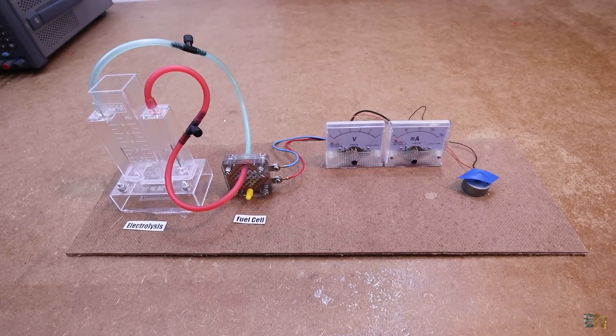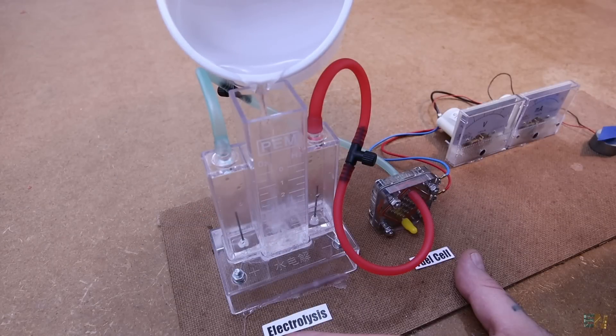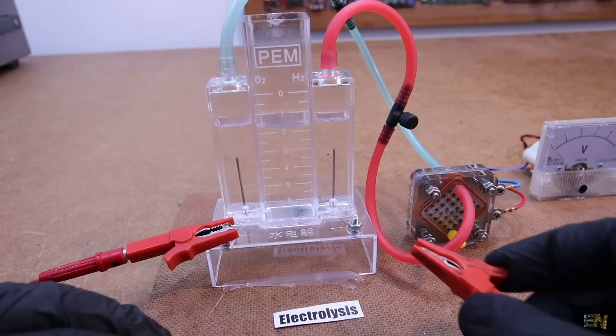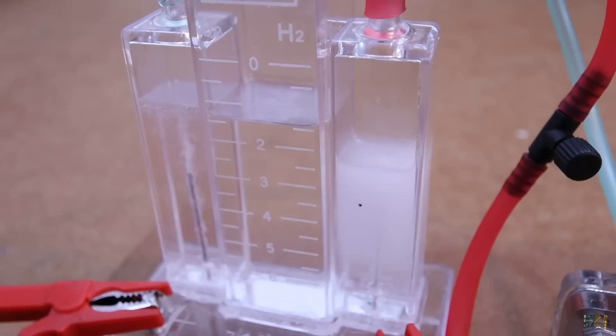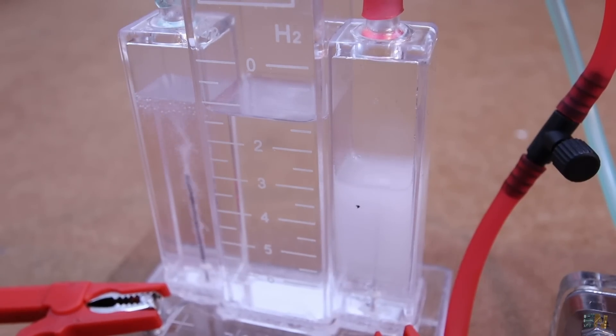And the experiment setup is ready. So I add the sodium hydroxide water once again into the electrolysis device. I first supply power to the electrolysis process. And we can see how the hydrogen and the oxygen volume is going up. Because the small valves are closed.